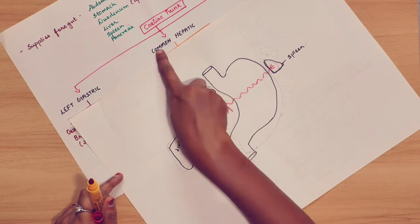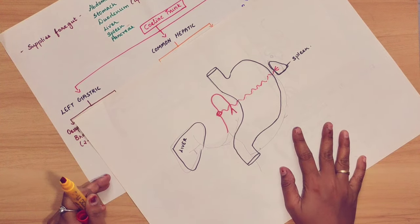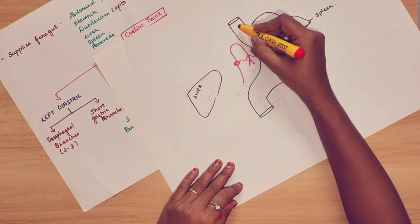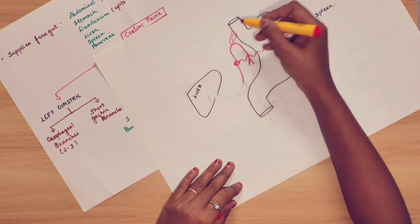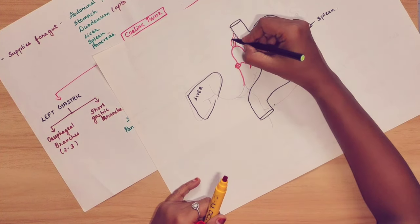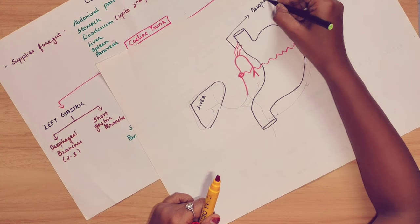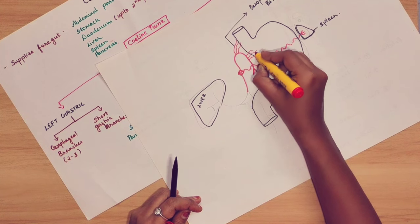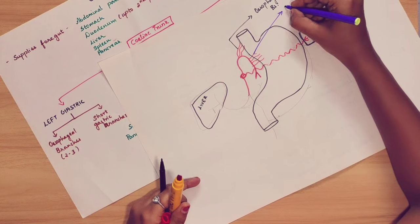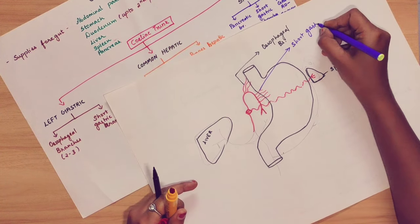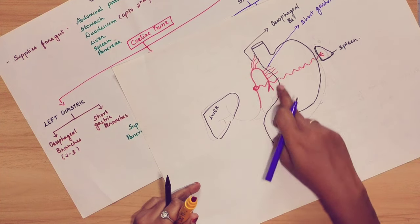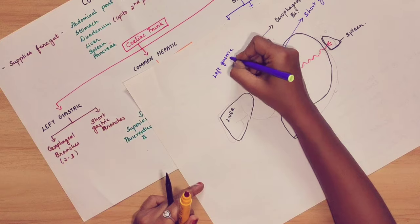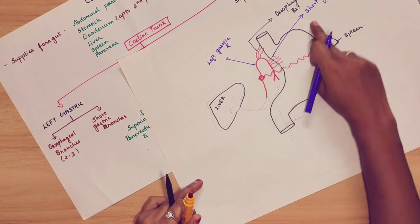So these are the three main branches: left gastric artery, common hepatic artery, and splenic artery. The left gastric artery goes toward the esophagus, giving esophageal branches. The second branch of the left gastric artery is the short gastric branch.